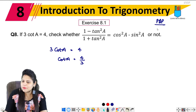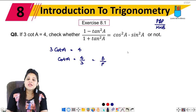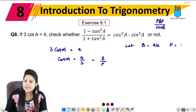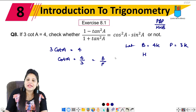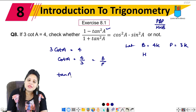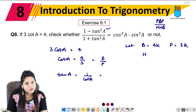We have to do the same thing here. Let base equal to 4K and perpendicular equal to 3K. Now let's take the hypotenuse. For tan A, we know that tan A is 1 upon cot A. Since cot A is 4 upon 3, tan A will be 3 upon 4. So we get the tan A value.